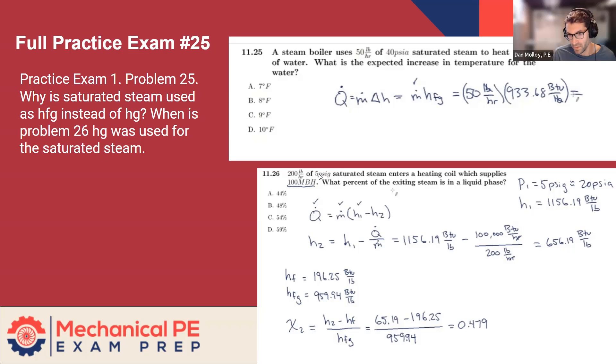H1 is known. The entering condition is fully defined, pressure and saturated. Mass flow rate is given. And the capacity of the steam coil is given. So we can find H2.